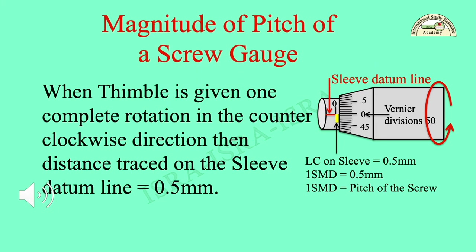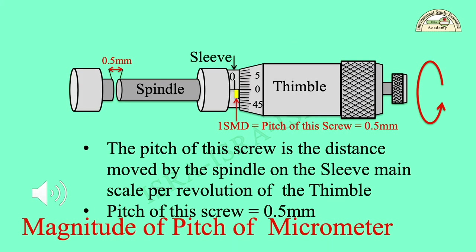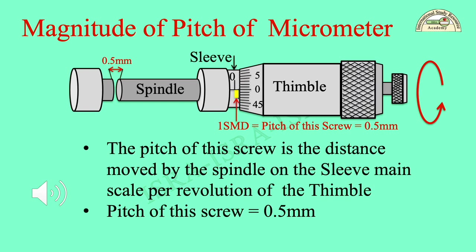When the thimble is given one complete rotation in the counterclockwise direction, the distance traced on the sleeve datum line is equal to 0.5 mm. The pitch of this screw is the distance moved by the spindle on the sleeve main scale per revolution of the thimble. Therefore, the pitch of this screw gauge is found equal to 0.5 mm.